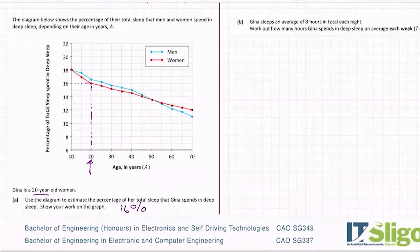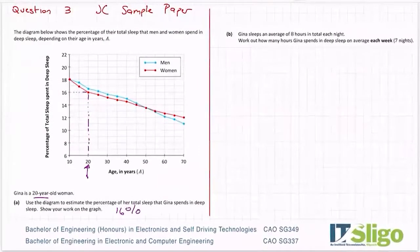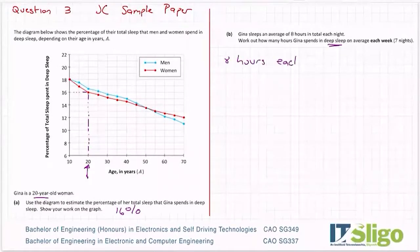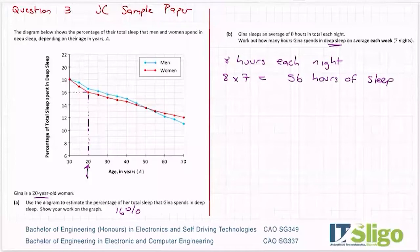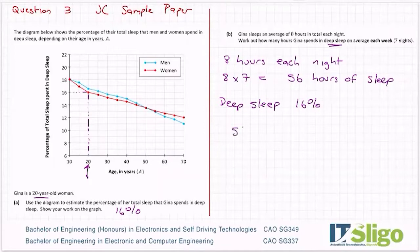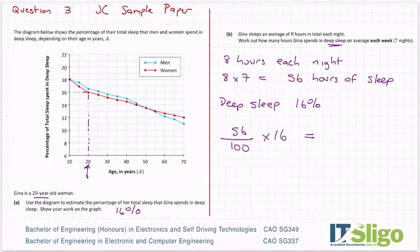Part B: Gina sleeps an average of 8 hours each night. Work out how many hours she spends in deep sleep on average each week. In a week that's 7 × 8 = 56 hours of sleep. We know it's 16% of the time, so: 56 ÷ 100 × 16 = 8.96 hours.